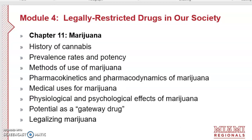In Chapter 11 we'll talk about marijuana — the history of cannabis use, prevalence rates, potency issues with different strains, and methods of use including smoking versus eating edibles versus other methods.